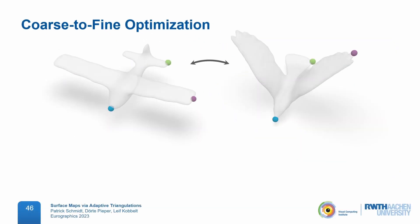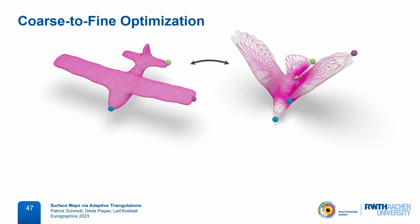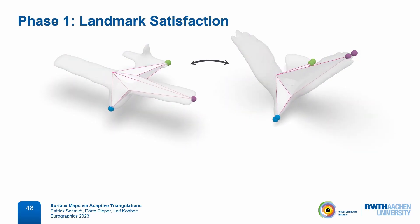Let's look at one optimization sequence in detail. We start with the input meshes and optionally a few landmark correspondences, and we can initialize the common triangulation with any triangulation of the sphere — here we just choose a copy of mesh A. In a first algorithm phase, we switch to an extremely low resolution at which we can quickly satisfy landmark constraints via an additional penalty term. Guaranteeing landmark satisfaction in general is a very hard problem and this is just a heuristic approach, but it works well enough for a reasonable choice of landmark positions.